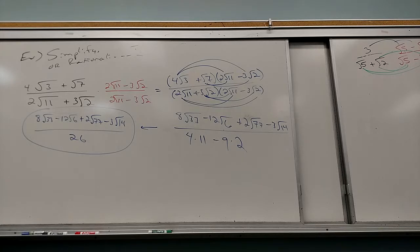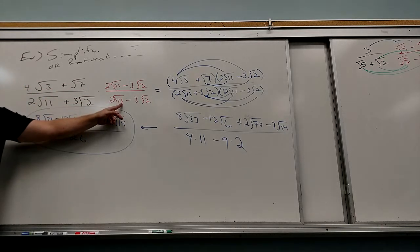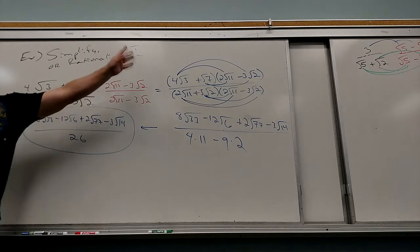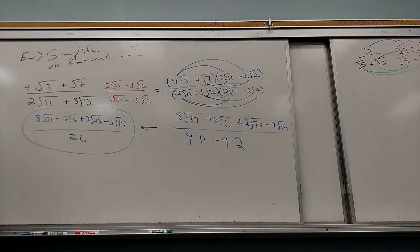The only really new idea in there is the conjugate. The rest is built off old stuff. When you put it all together it feels completely different, but I'm just FOILing. The conjugate part — that's new. Then I'm just FOILing. Yes, I've got radicals in there, so that feels new, but the FOILing process stays the same.